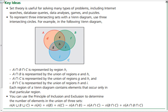To represent the three intersecting sets with a Venn diagram, use three intersecting circles. For example, in the following Venn diagram, you have your intersecting circles A, B, and C, and all of the different parts labeled.